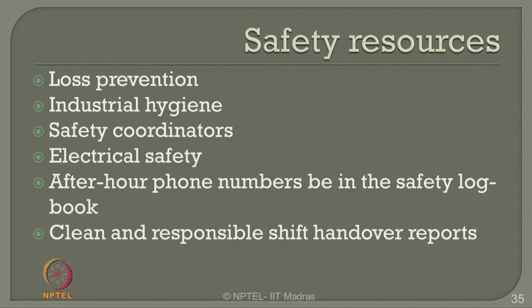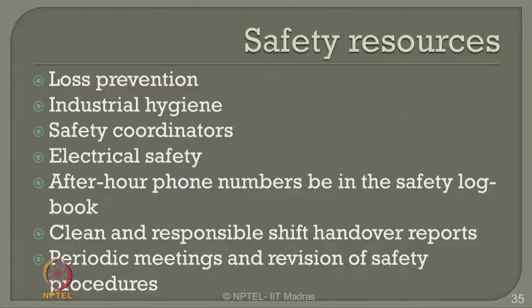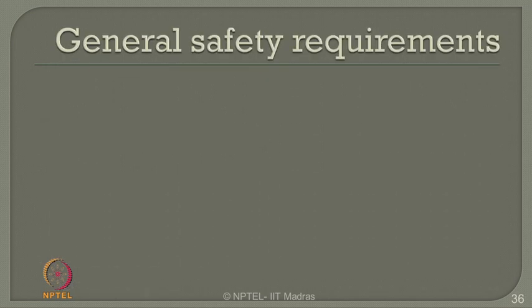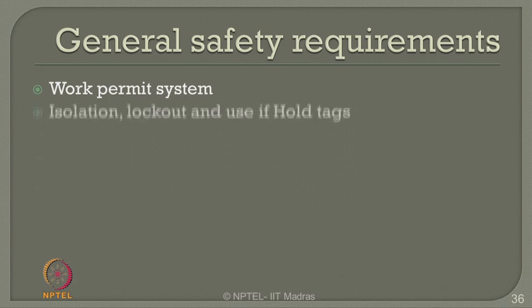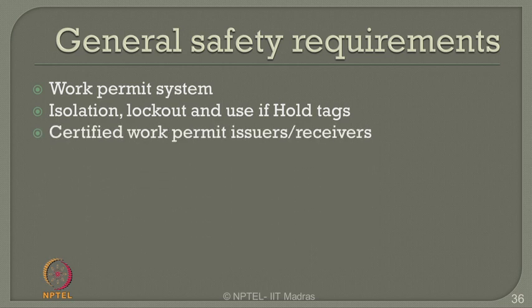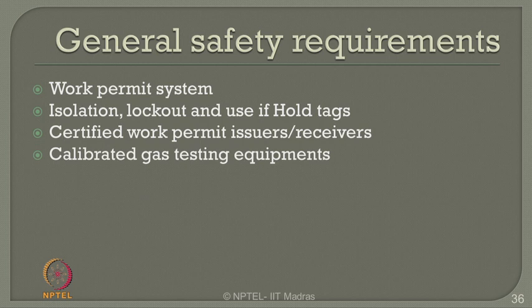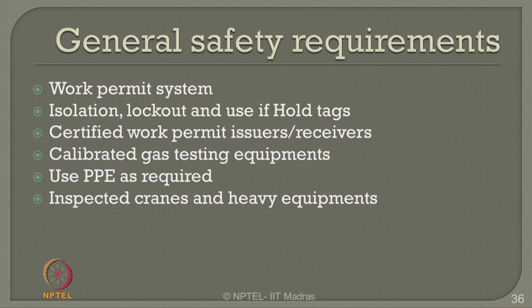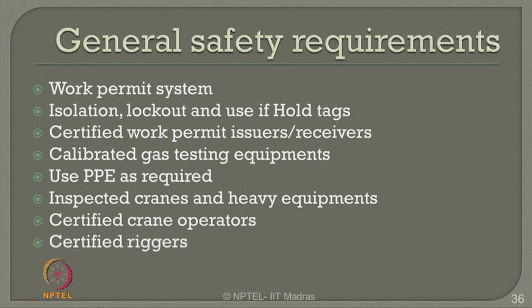You must conduct periodic meetings and revisit safety procedures involving interested personnel. What are the general safety requirements? Work permit system, isolation, lockout, and use of hold tags. Certified work permits must guarantee certified issuers and receivers. Use calibrated gas testing equipment and plant personal safety equipment as required. Inspect cranes and lifting equipment periodically. Only certified crane operators should be entrusted to operate cranes, certified riggers to operate rigs, and certified radiographers to carry out radiographic services.